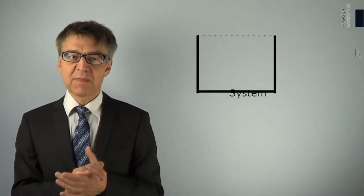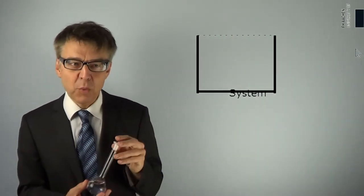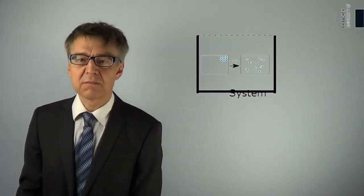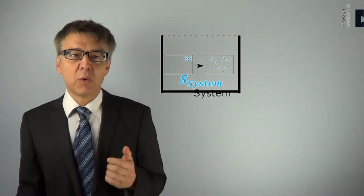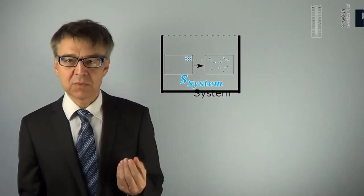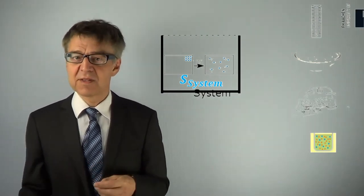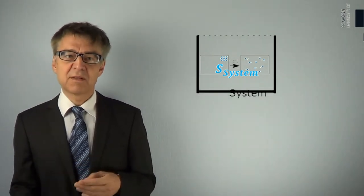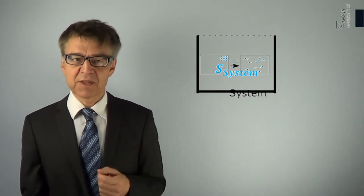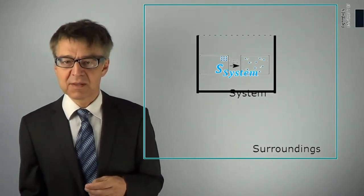We switch from energy to entropy consideration. Each system does not only come with a certain amount of energy, namely the enthalpy, but also with a certain degree of disorder, a certain chaos. We call this property entropy S. The entropy depends on the system's temperature, its phase, its chemical composition, and very strongly on its dilution. Of course, the surroundings also have a certain degree of disorder, which can be summarized by the entropy of the surroundings.